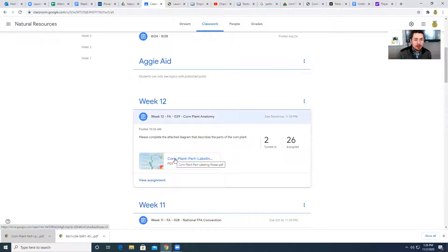There is a PDF here that I want you to fill out so you can open it in Kami and write it down if you've got a PDF editor. Basically, it's got all the parts of the corn plant listed and some short definitions about them.